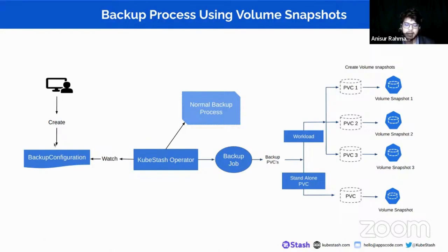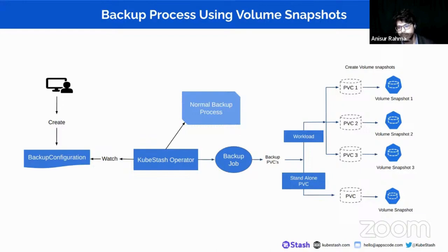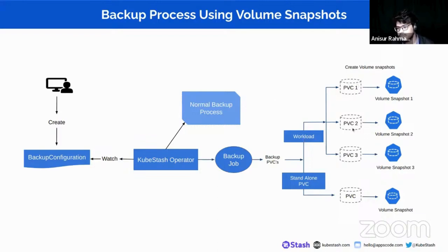First of all, a user creates a backup configuration. The KubeStash operator watches this backup configuration and starts the normal backup process. The KubeStash operator creates a cron job. The cron job is responsible for creating a backup session, and the backup session resolves all add-on functions and add-on images and creates a backup job. This backup job is responsible for creating volume snapshots.